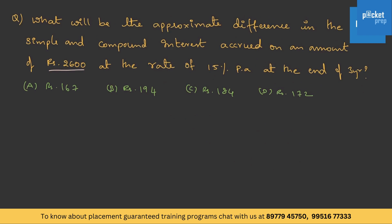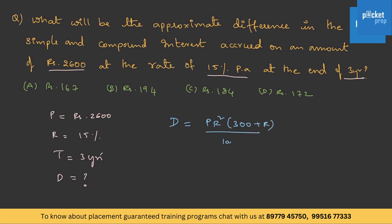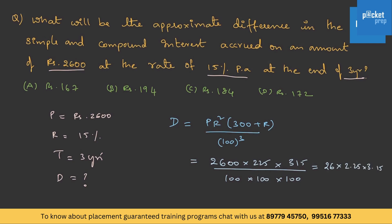One more question: what will be the approximate difference in simple and compound interest on an amount of rupees 2600 at the rate of 15% per annum at the end of three years? Given: P = 2600, r = 15%, t = 3 years. Using the formula for three years: difference = Pr²(300 + r) / 100³ = 2600 × 225 × 315 / 1,000,000 = 26 × 2.25 × 3.15 = approximately rupees 184. Generally, questions from this topic are pretty simple and direct, so practice well and memorize the formulas thoroughly.